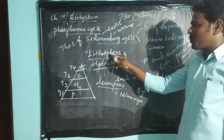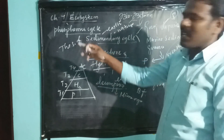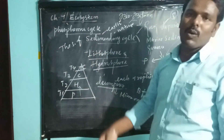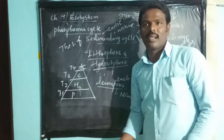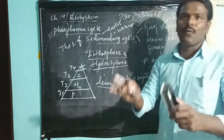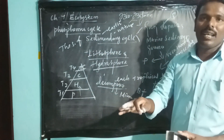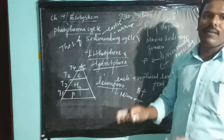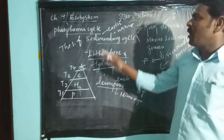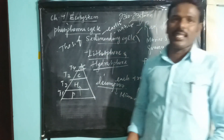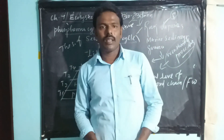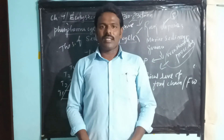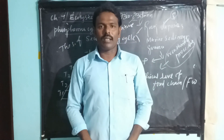The lithosphere is the surface of the soil, and the hydrosphere is the surface of the water. So finally, the phosphate cycle is maintained. Today's class is over — thank you.